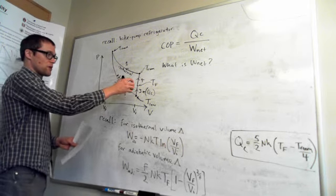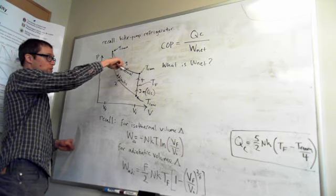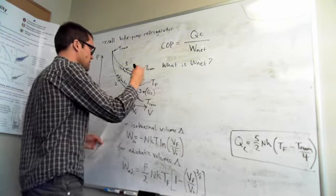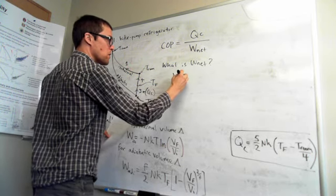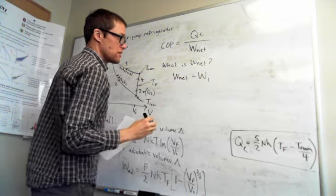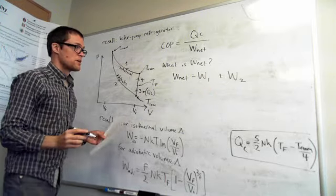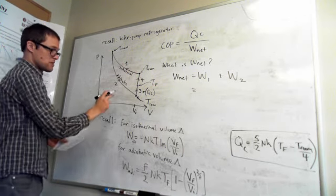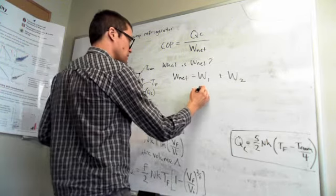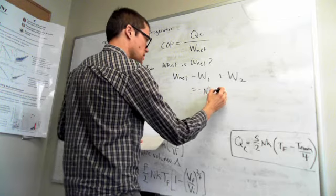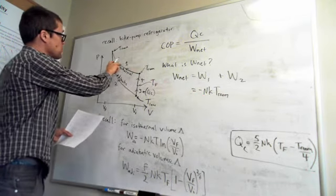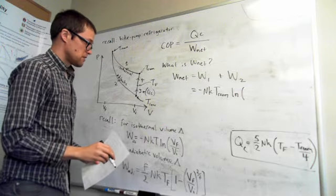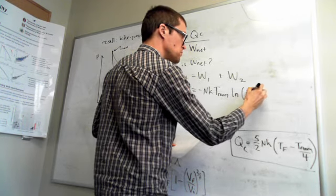The net work has contributions from step 1 and step 2. For step 1 (isothermal at room temperature), W1 = −nkT_room × ln(1/32). For step 2 (adiabatic), W2 = (5/2)nk × T_low × [1 − (V_f/V_i)^(2/5)], where T_low = T_room/4 is the final temperature after the adiabatic expansion.